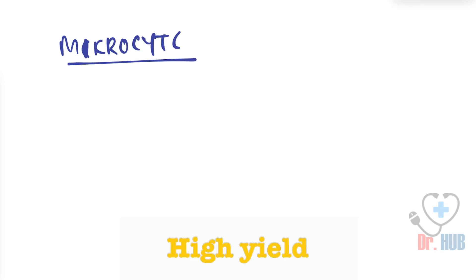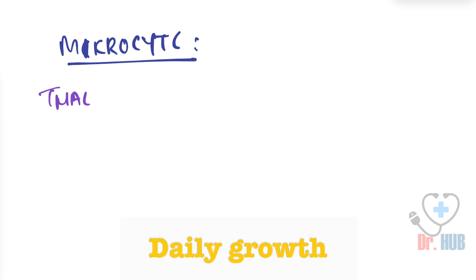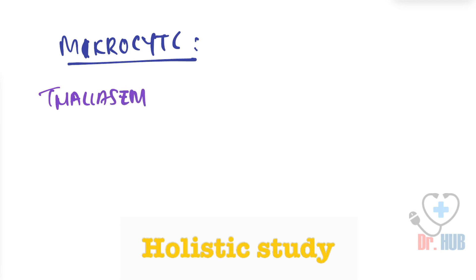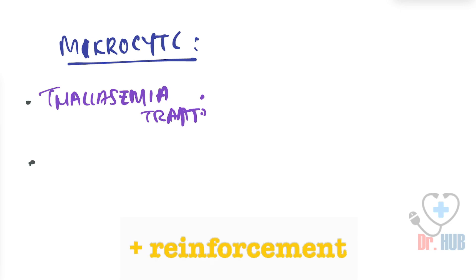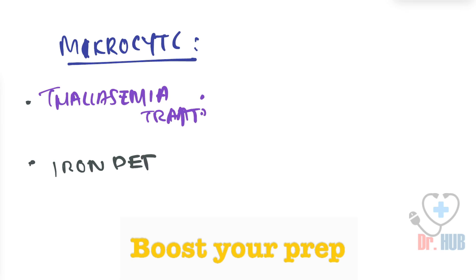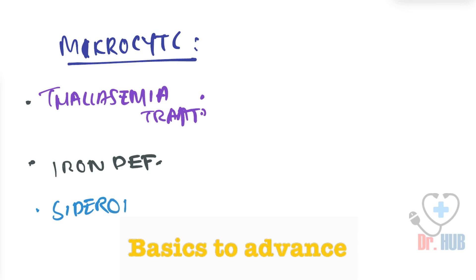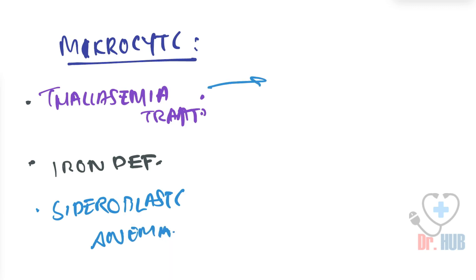We need to classify anemia. Anemia is divided into microcytic, macrocytic, and normocytic. Under microcytic anemia, the components include thalassemia trait, iron deficiency anemia, and sideroblastic anemia.